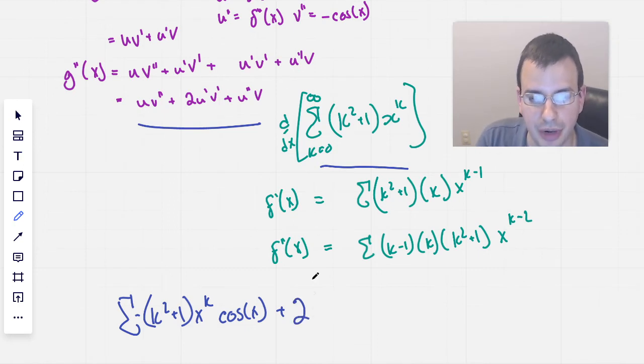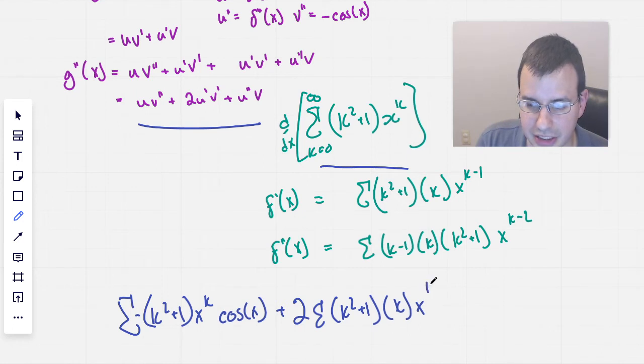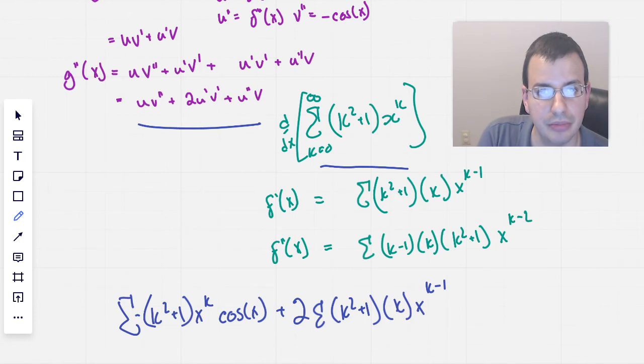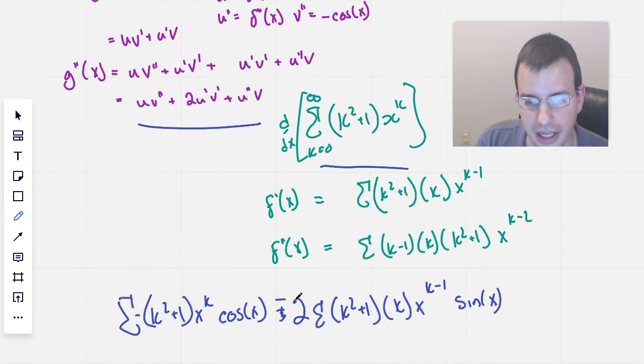Plus 2 u prime. U prime is f prime of x, which is this one. Summation (k² + 1) times k times x to the k minus 1 times v prime. v prime is negative sine of x. So sine of x. I'll put a little negative in here. Negative.